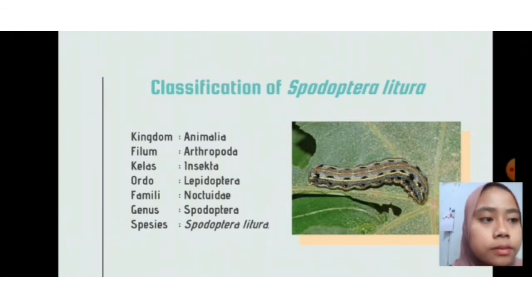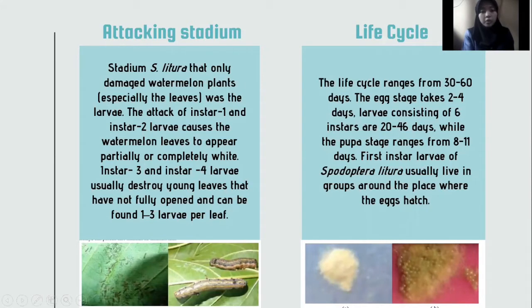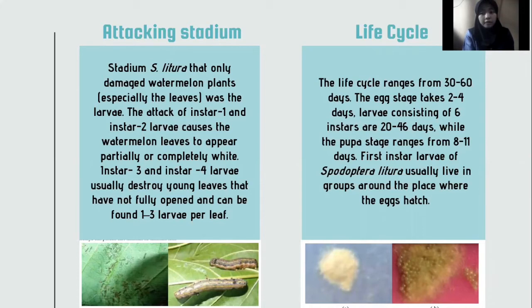The attacking stadium of Spodoptera littoralis that damages watermelon plants is the larval stage. The attack of instar 1 and instar 2 larvae causes the watermelon leaf to appear skeletonized. Instar 3 and instar 4 larvae usually destroy young leaves that have not fully expanded and can be found one to three larvae per leaf. The life cycle ranges from 30 to 60 days: the egg stage takes 2 to 4 days, larvae consisting of six instars last 20 to 46 days, and the pupal stage ranges from 8 to 11 days.